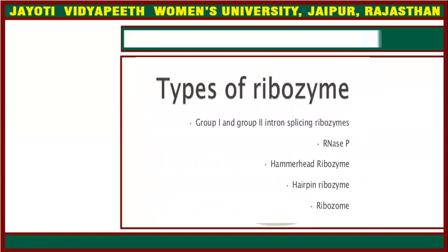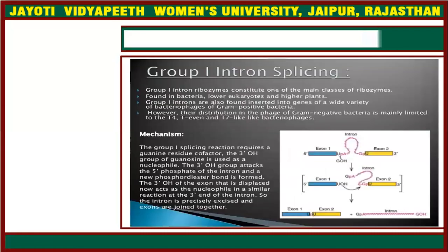What are the types of ribozymes? Group 1 intron splicing ribozymes, Group 2 intron splicing ribozymes, RNase P, hammerhead ribozymes, hairpin ribozymes, and the spliceosome.